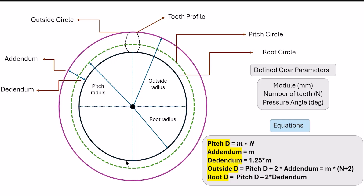We need to define the diameter of these three basic circles. The pitch diameter is equal to the module times the number of teeth. The outside diameter equals the pitch diameter plus two times the addendum, where addendum is the radial difference between the outside circle and the pitch circle — for standard gears it equals the module. The root diameter equals the pitch diameter minus two times the dedendum, which for standard gears equals 1.25 times the module.